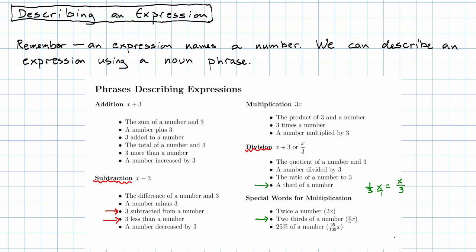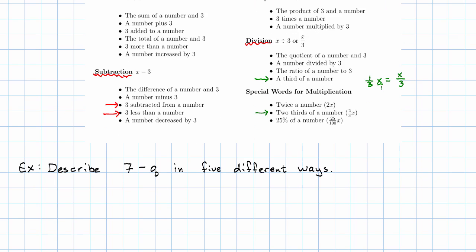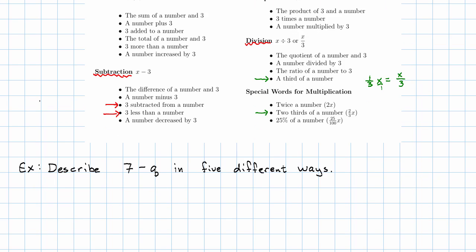Let's see an example of this in action. Let's say we have an expression and we want to describe it. Let's say we want to describe the expression seven minus q. Q is our variable. This is subtraction, so I'm going to look at the subtraction part of my list. Q is my variable.